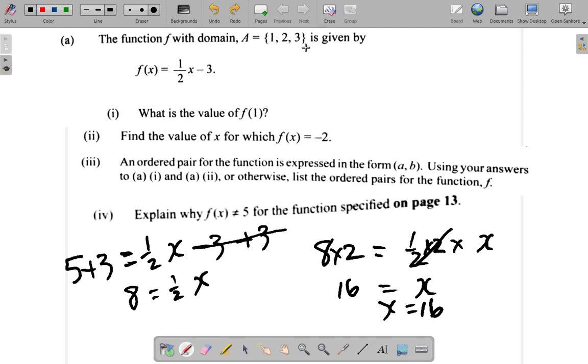x is either 1, 2, or 3. No other number. And this is saying x is 16. So f of x cannot be 5. That's not included in this situation.